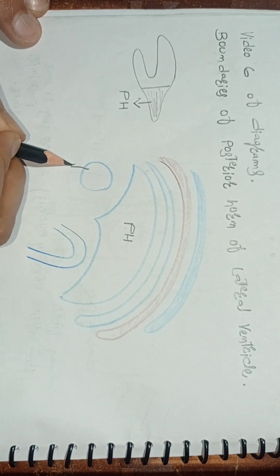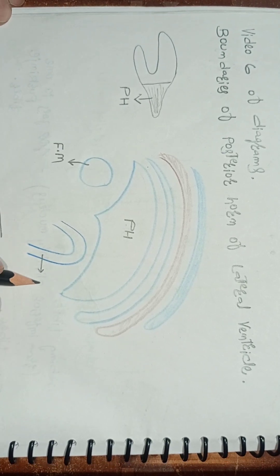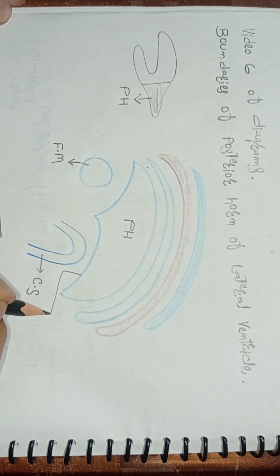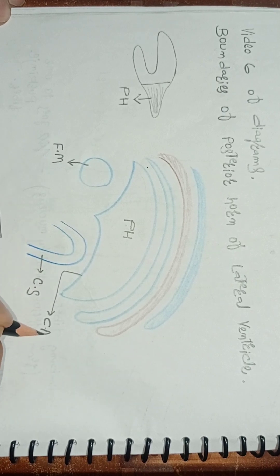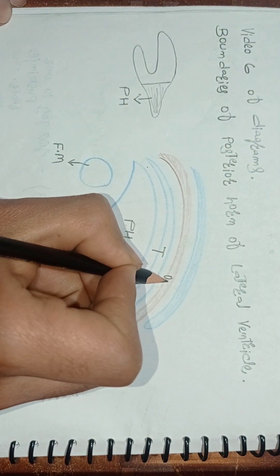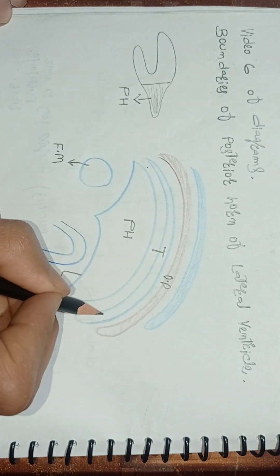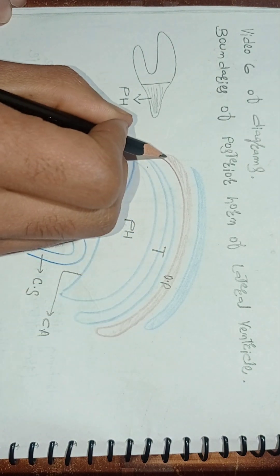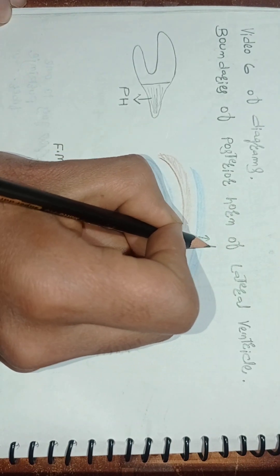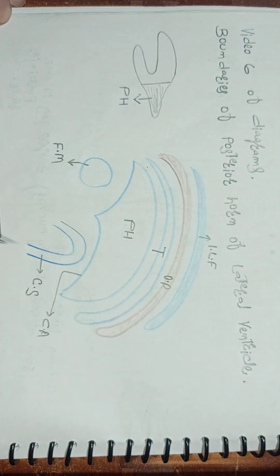This circular part is called the forceps major. This part right here is called the calcarine sulcus. And this part right here is the calcar avis. This part right here is the tapetum, and this part right here is the optic radiation. And this part right here is the inferior longitudinal fasciculus.